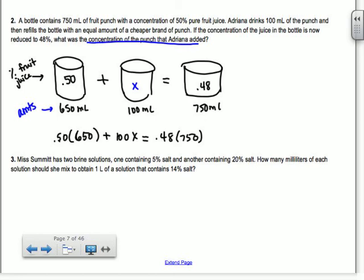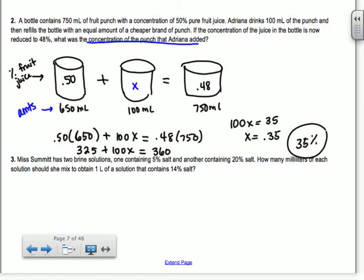So go ahead and multiply out and solve. So you get 325 plus 100X equals 0.48 times 750 is 360. Subtract the 325 over, you get 35. So 100X equals 35. So X equals 0.35. So think about what this means. If it's 0.35, what percent of fruit juice is it? 35%, right? And that's your answer. All of these work in the exact same way. So it always helps when you draw the little buckets or jars.